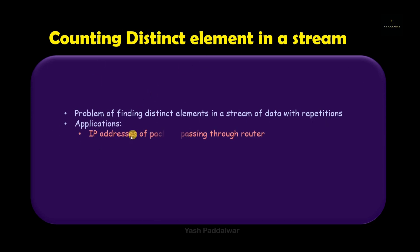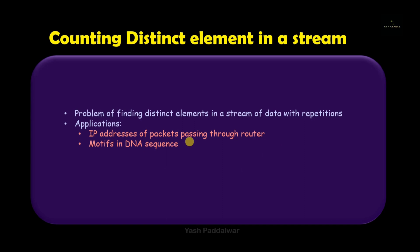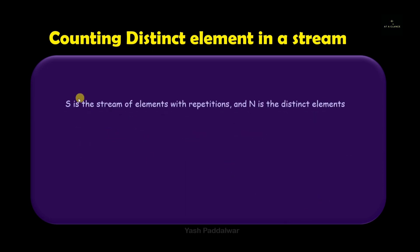Now, what is the use of finding the distinct elements? There are many uses, but a few I have listed here. The first use is regarding the IP addresses of packets passing through the router — some packets may be repeated or redundant, so finding the distinct ones is very important. Second, we can use it in finding the distinct patterns from the motifs in the DNA sequence, which is very important in the medical domain. And next, in the technical domain, we can use it to find out the unique visitors to a particular app or website, since many users may visit the same website multiple times, preventing the owner from getting the exact count of unique visitors.